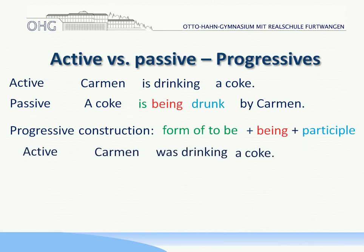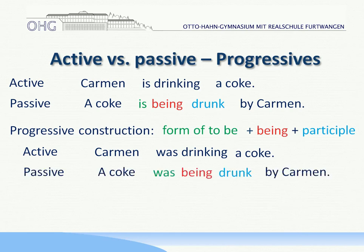Another example: in the active, Carmen was drinking a coke. You of course know that 'was drinking' is the past progressive. So in the passive it is: a coke was being drunk by Carmen.